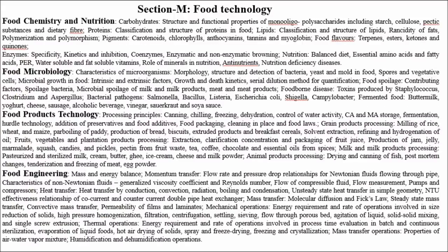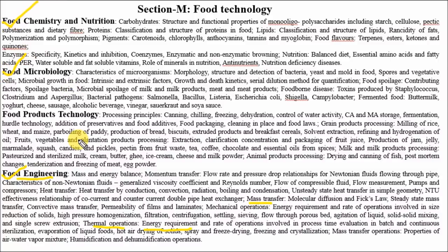The next section is food technology. The food engineering chapter is very important because many numerical questions come from topics like thermal operations, energy requirements, mass transfer processes, and heat transfer processes. Another two important chapters are food microbiology and food chemistry and nutrition. These three are the major important topics for the food technology section.